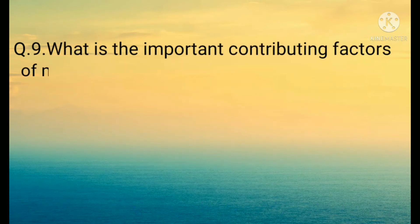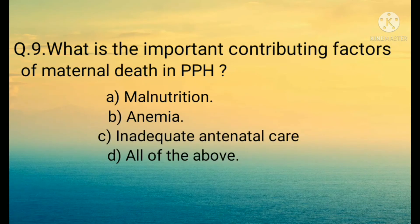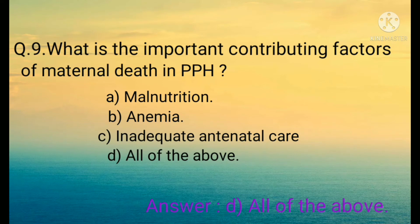Question number nine: What are the important contributing factors of maternal death in PPH? Options are: A) Malnutrition, B) Anemia, C) Inadequate antenatal care, D) All of the above. The correct option is D) All of the above. In addition, lack of blood transfusion facilities and substandard care are also important contributing factors of maternal death in PPH.